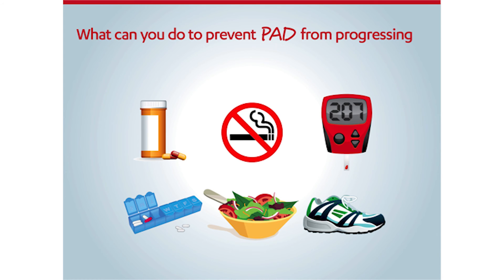Following a healthy diet, getting regular exercise three to five times per week for 30 or more minutes each time, and controlling your blood glucose levels are also important ways to keep PAD from progressing.